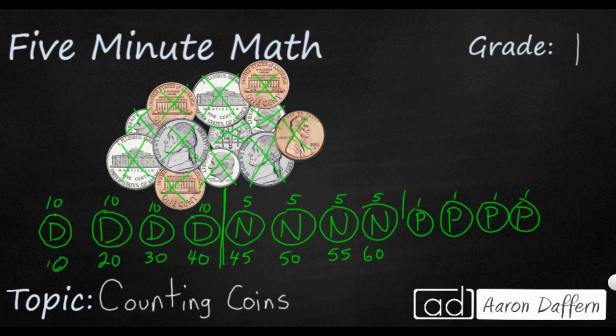I'm going to put another line here because now we're switching over to pennies. And if we want, we can skip count by twos. That's something that we're learning in first grade, or you can just count by ones. But that's going to be 62, and that's going to be 64. So we have 64 cents in our collection of coins.